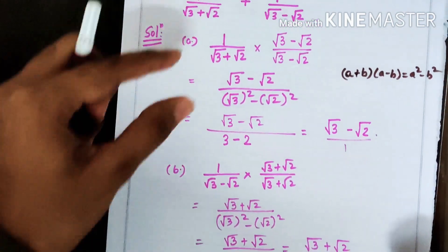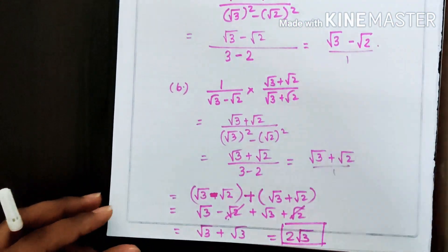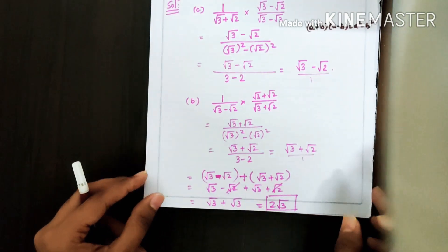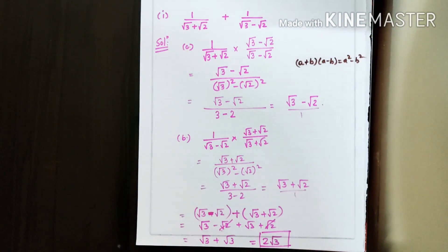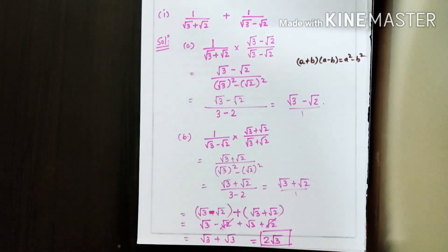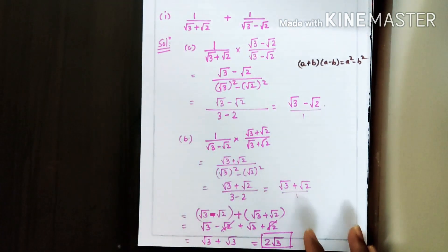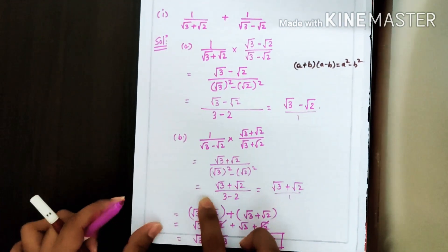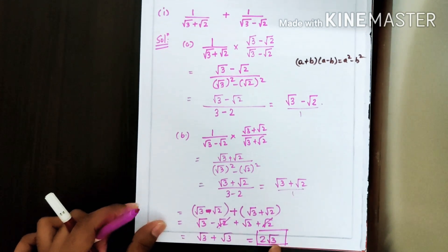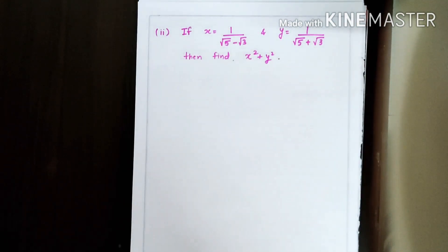When we rationalize these two terms and add them, the answer is 2√3. This is our final solution, and this kind of question is being asked in examinations. We solved it part by part — first this part, then the second part — and then added them. Our final answer is 2√3. Let us take one more example.